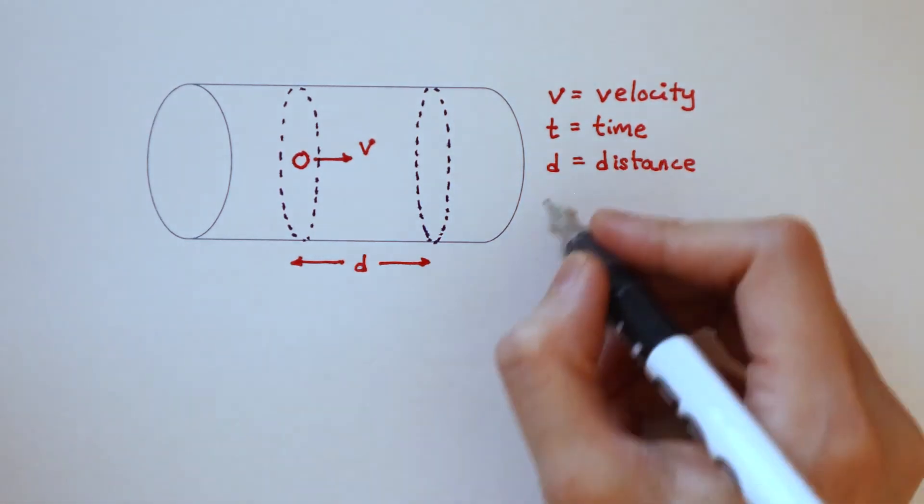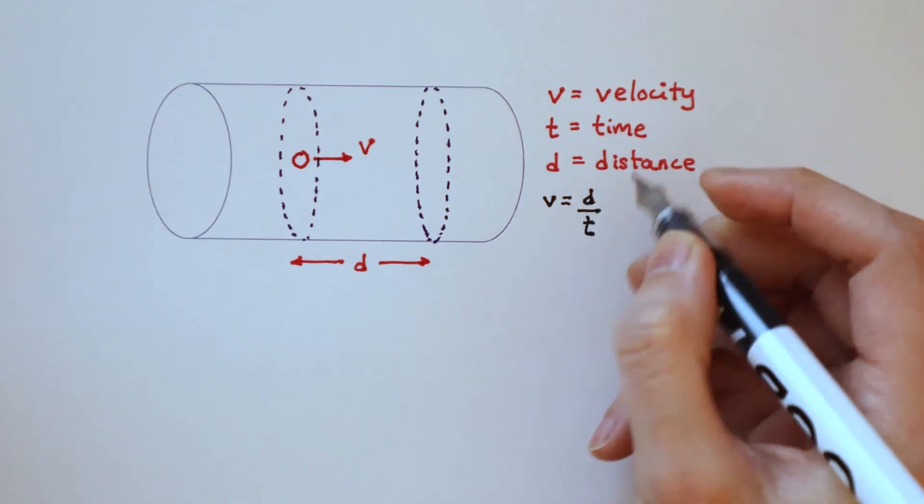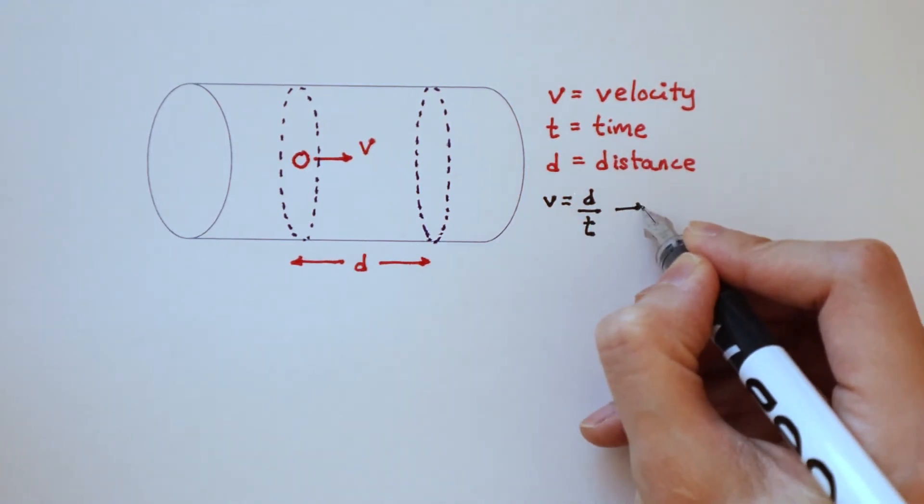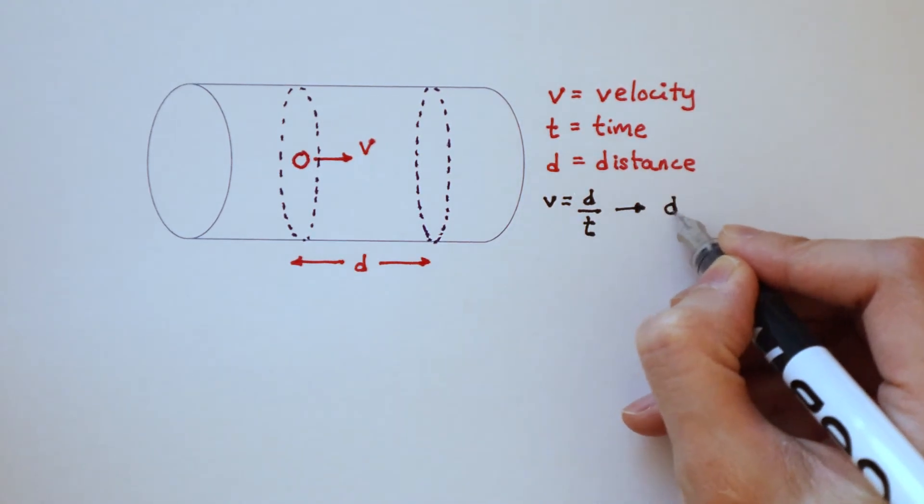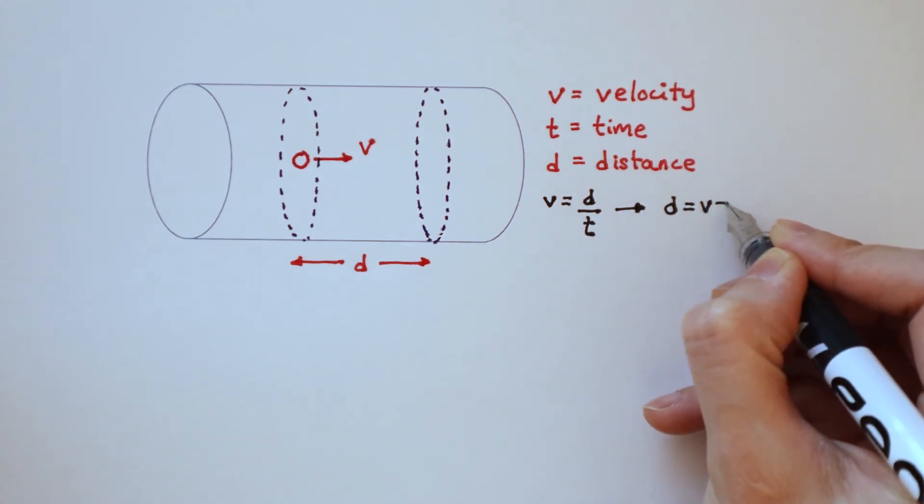By definition, velocity is distance divided by time. Rearranging this, distance is velocity multiplied by time.